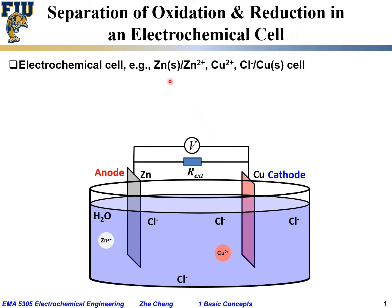Let's again look at our electrochemical cell, which consists of zinc, copper, and in between an electrolyte that contains zinc ion, copper ion, and the balanced anion would be chlorine ion. This is our electrochemical cell — zinc metal and copper metal inserted into an electrolyte solution that contains zinc ion, copper ion, as well as the counter ion, which is chlorine anion. The cations are zinc and copper, and the anion is chlorine.